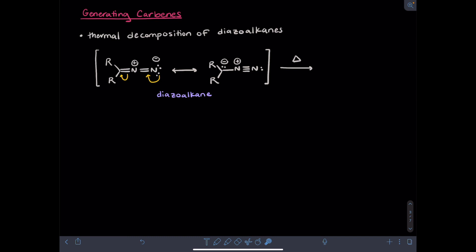In the other resonance form, the central nitrogen will remain cationic, but now it is a carbanion type of resonance form. This resonance form is easier to see the carbene formation from. To generate the carbene, you would break the carbon-nitrogen bond and bring the electrons to nitrogen. The carbon would retain its lone pair and now have an incomplete octet and be present as a carbene. This reaction is very entropically favorable because it generates nitrogen gas.